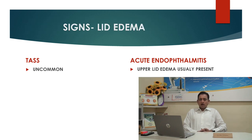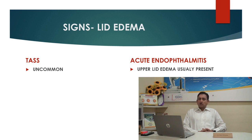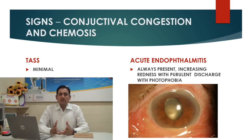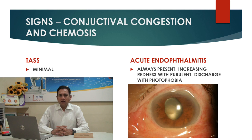Lid redness and edema is usually present in actual endophthalmitis cases, whereas lid edema in TASS is usually uncommon. Signs like conjunctival congestion and chemosis are usually more often seen in endophthalmitis cases, and in TASS these signs are minimal.